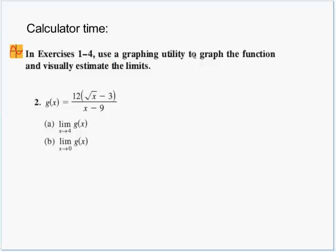There's a calculator exercise asking you to graph the function in a graphing utility — make sure to parenthesize the numerator under the radical sign and the denominator separately. Use the trace feature to visually estimate the limits around x equals 4 and x approaching 0. All six theorems are ultimately about direct substitution — always try direct substitution first when evaluating a limit. That's a good spot to end this first video for section 2-3.